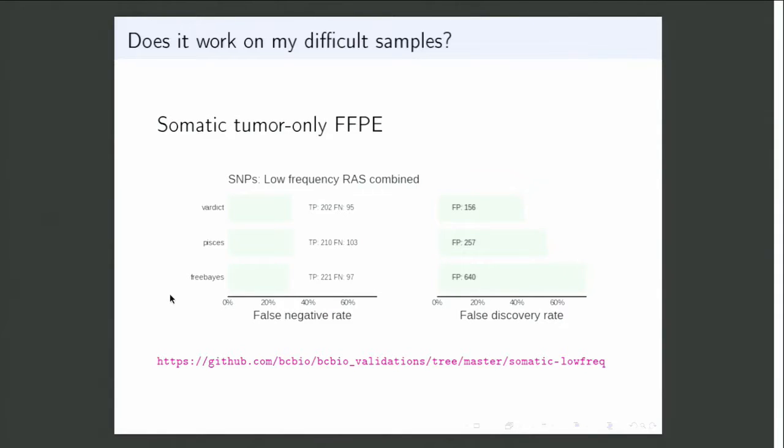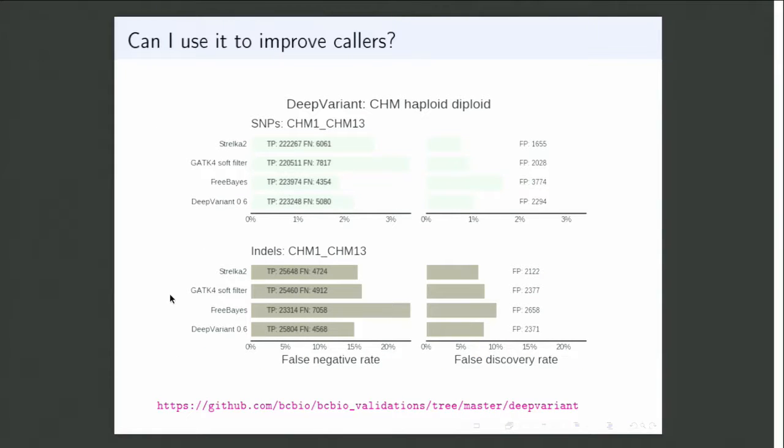Once you're doing validation on difficult things, the next question is can you use it to improve your callers. It's 2018, so you have to mention machine learning. Deep Variant is an awesome orthogonal approach to tools like GATK, Strelka, and Freebayes — it calls variants in a completely different way using machine learning. For machine learning, it's really important to have solid input data for training and validation. Deep Variant was trained on Genome in a Bottle samples, and this completely orthogonal dataset — the CHM haploid-diploid from the Broad — uses a different sequencing technology, letting you compare Deep Variant and other callers to help improve general training.